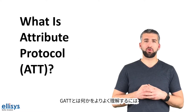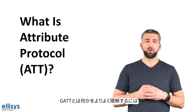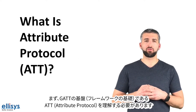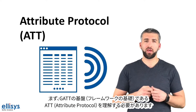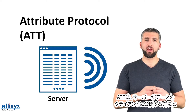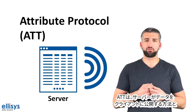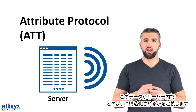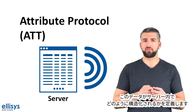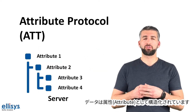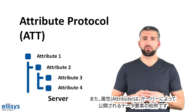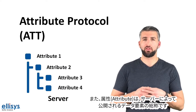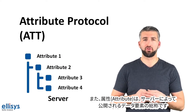To better understand what GATT is, we first need to understand the underlying framework or infrastructure for GATT, which is the Attribute Protocol. The Attribute Protocol defines how a server exposes its data to a client and how this data is structured within that server. The data is structured as attributes, and an attribute is simply the generic term for any data element that is exposed by the server.